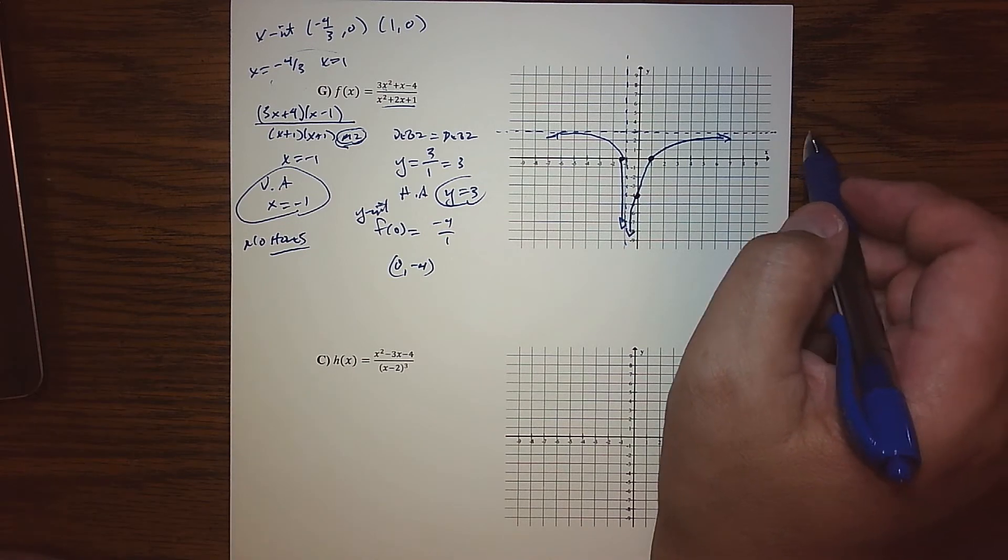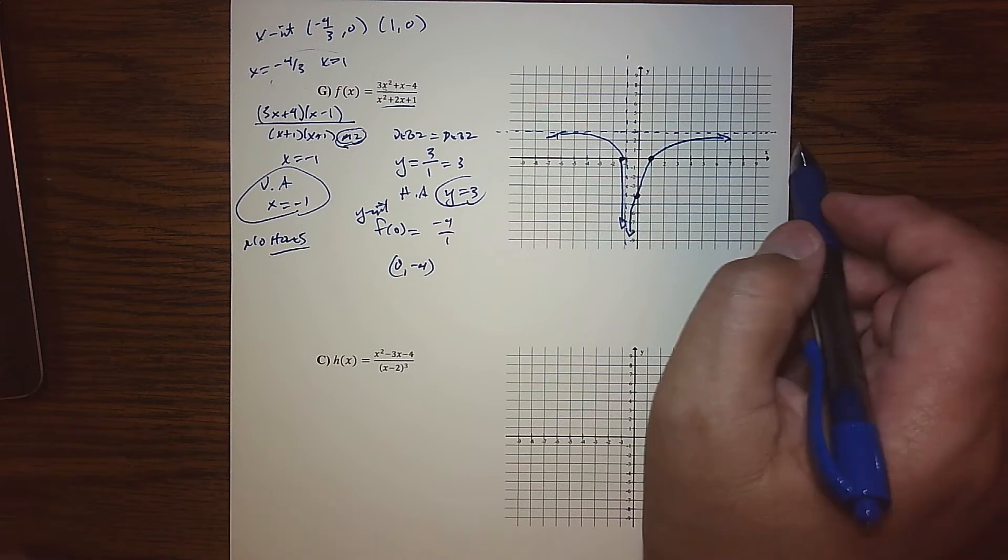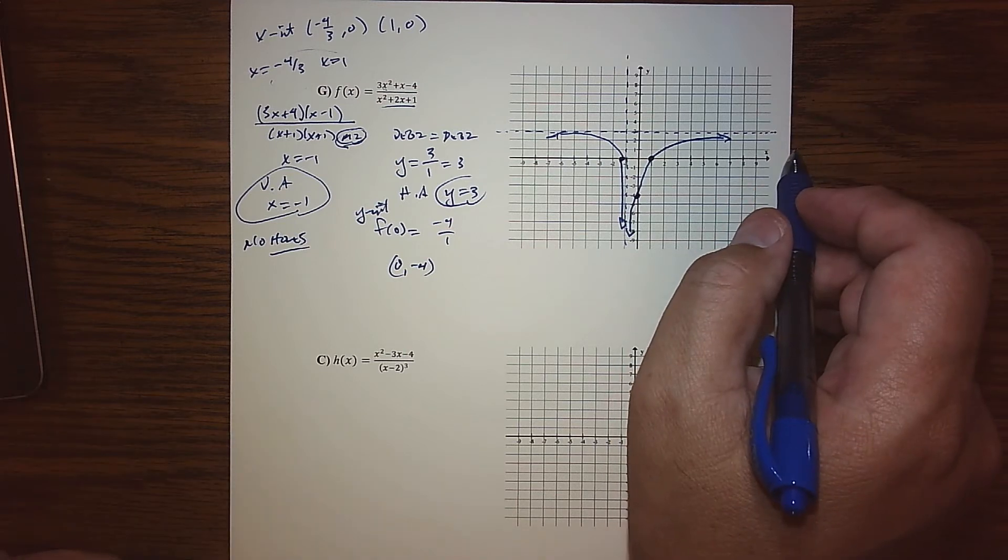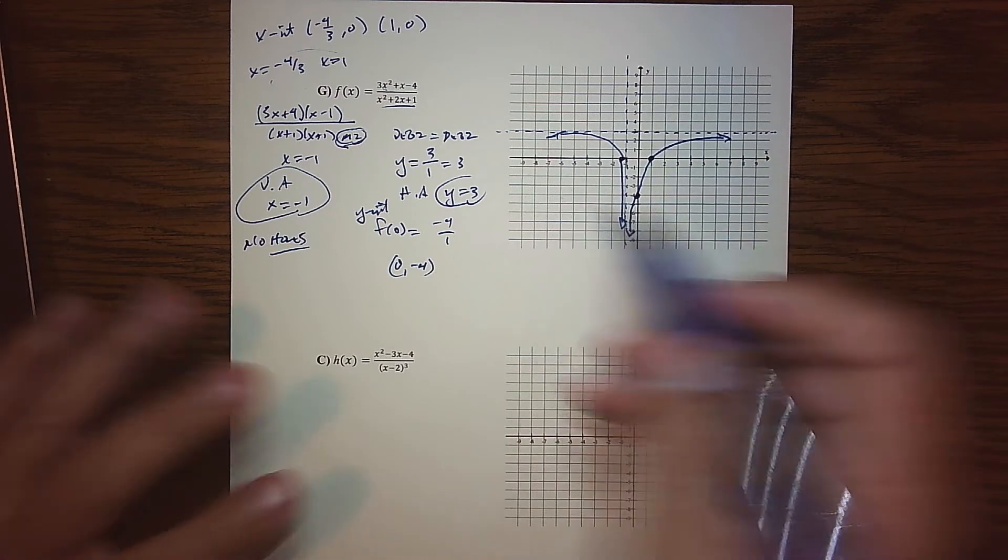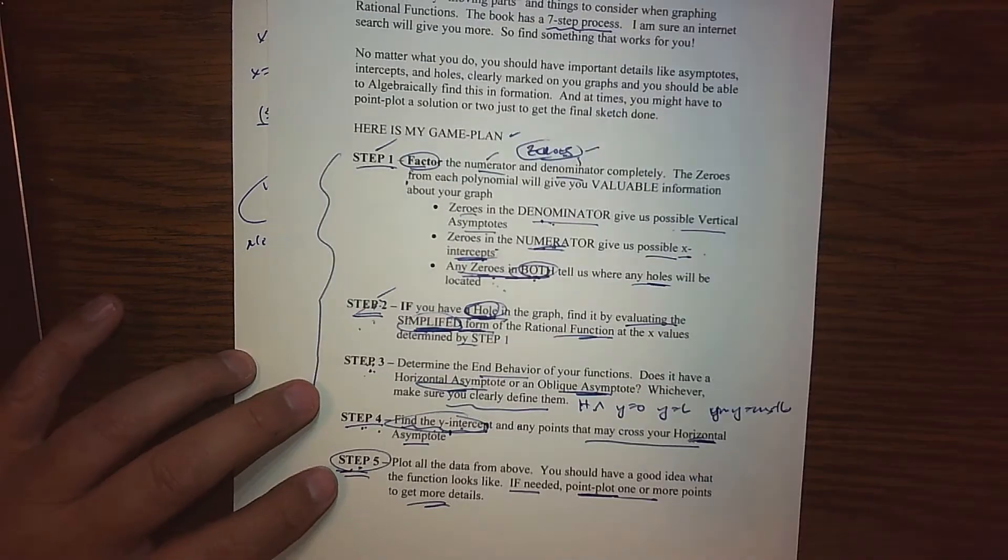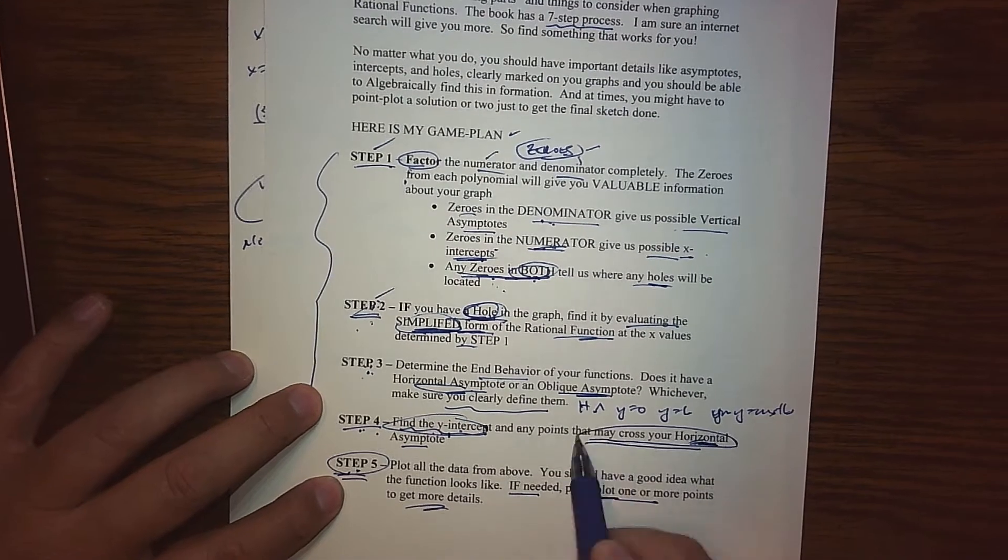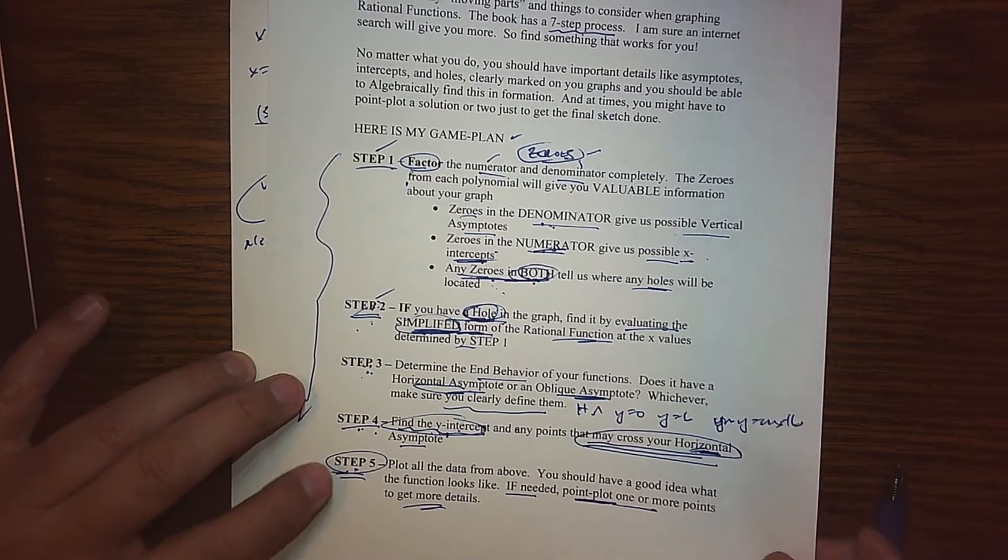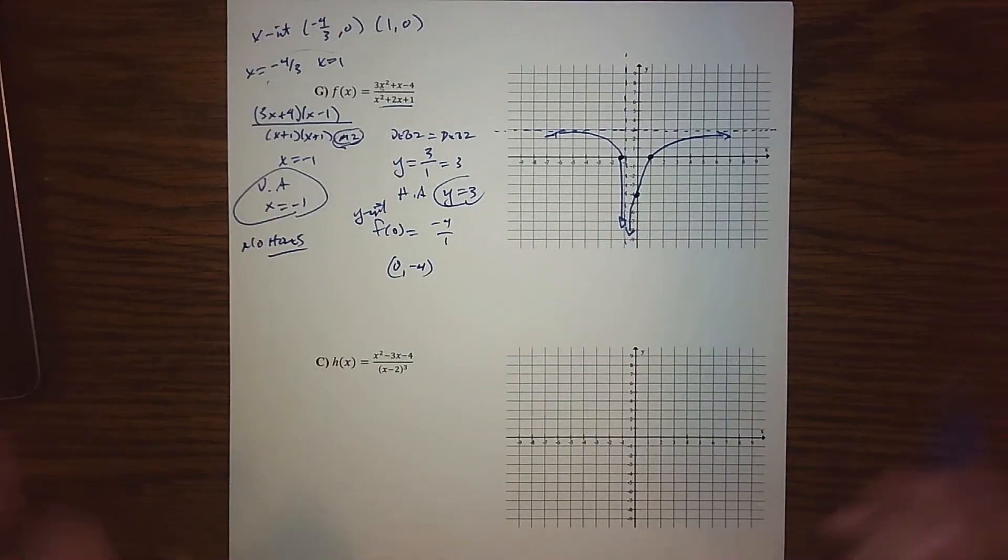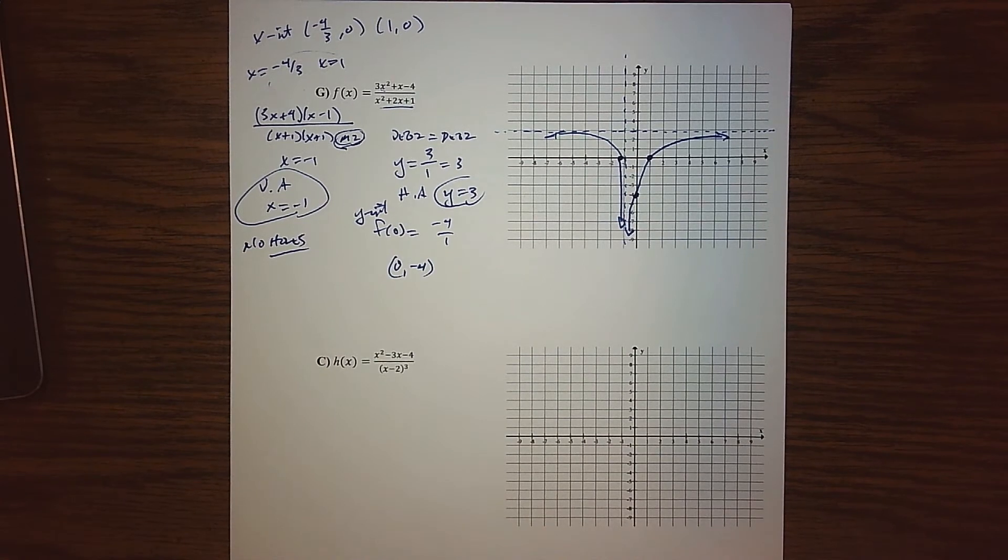So there again is a pretty rough sketch of what our function looks like. However, I do know a little bit more about this function. It does turn out, and so this might be appropriate - I've been kind of avoiding it until this one - you may want to follow the book's advice by finding where we cross the horizontal asymptote.